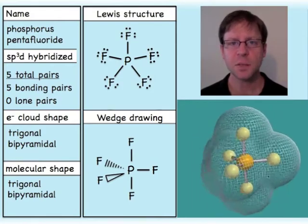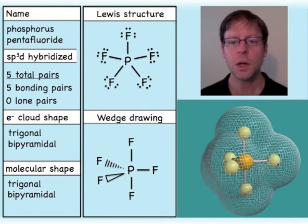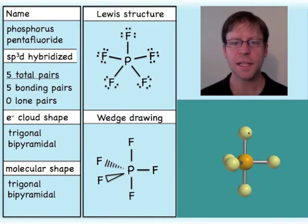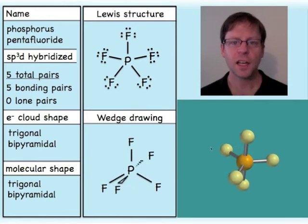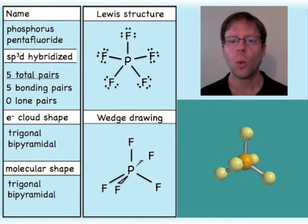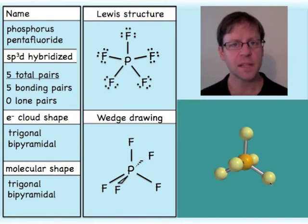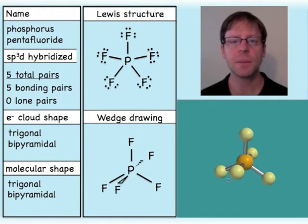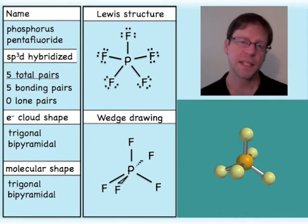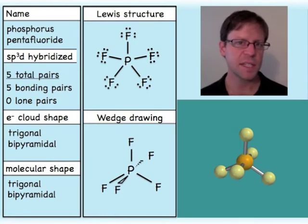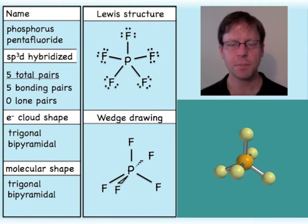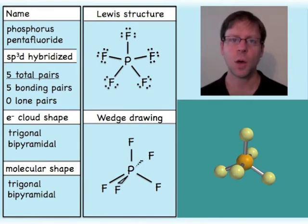To draw this on two-dimensional paper, I like to line up four atoms in the plane of the paper, then have one solid wedge coming out of the plane and one dashed wedge going back behind. Alternatively, you could line up four atoms in the plane and have one coming essentially straight out and one going essentially straight behind. Either approach is a perfectly valid wedge drawing.